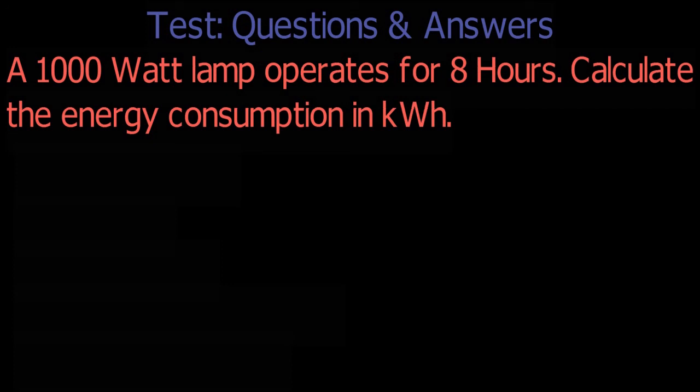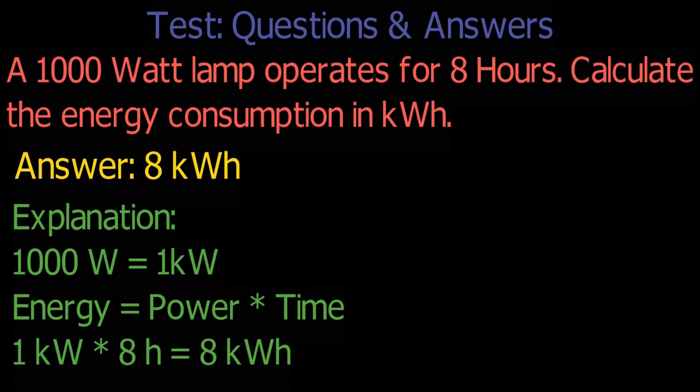The answer is 8 kilowatt hour. Explanation: 1,000 watt equals 1 kilowatt. We know that energy equals power multiplied by time. 1 kilowatt multiplied by 8 hours equals 8 kilowatt hour.